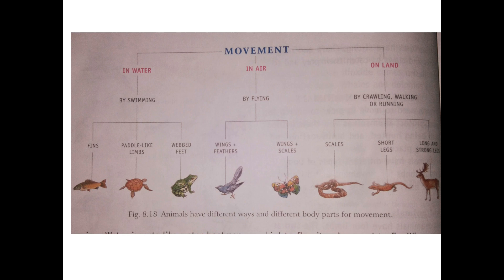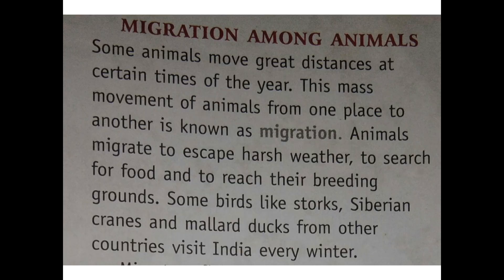In this picture you can see how different animals move — in water, in the air, and on land. Fish, turtles, and frogs are shown moving in water. Insects and birds are shown moving in the air. On land, snakes move with the help of scales, lizards crawl with their short legs, and other animals walk or run using their long strong legs.